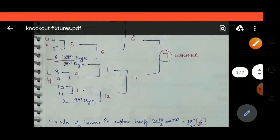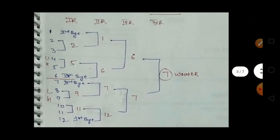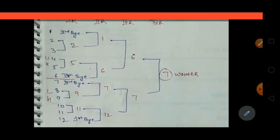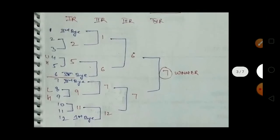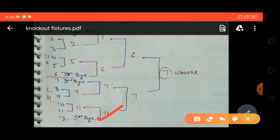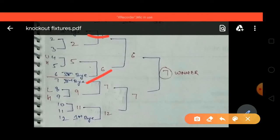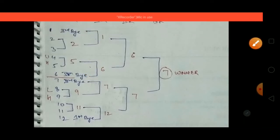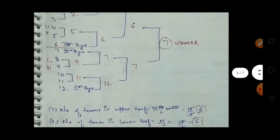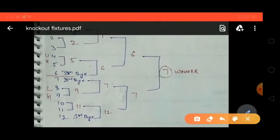Now the important thing is how to give the byes. The first bye goes to the lower half's lowest team, that is team 12. The second bye goes to the upper half's top team, that is team 1. The third bye goes to the lower half's top team, that is team 7. The fourth bye goes to the upper half's lowest team, that is team 6. So we have given all 4 byes.